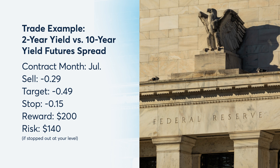If a trader believes that the curve could invert further from here, they could sell the July Micro 2-Year versus 10-Year Treasury Yields contract at negative 0.29 and target a move to the June lows of negative 0.49. A stop for this trade could be above at negative 0.15. This trade could make $200 if the target is reached and risks $140 if stopped out.